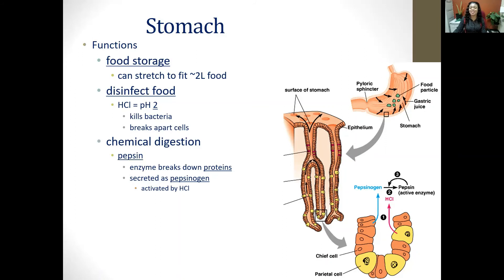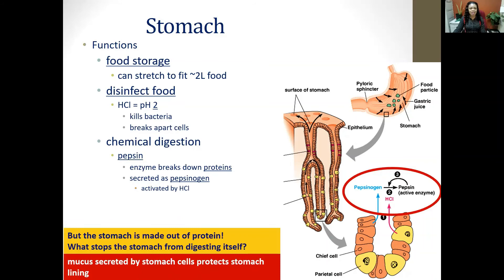Pepsin breaks down proteins into polypeptides. Importantly, pepsin doesn't exist in its active form — it is stored as an inactive form called pepsinogen, which is only activated by the secretion of hydrochloric acid. This is important so the stomach doesn't digest itself, since the stomach walls are actually made of protein. The mucus secreted by stomach cells also protects the stomach lining, and the enzyme remains inactive until food is present.